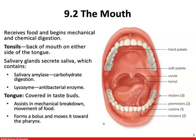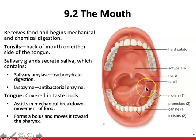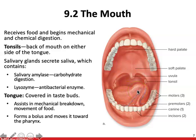Saliva also contains lysozyme, which is an antibacterial enzyme that helps protect us against diseases and foreign invaders coming in through our mouth. The tongue is covered in taste buds and is responsible for assisting in the mechanical breakdown and movement of food. The tongue forms a bolus — a mass of chewed food — and pushes it backward towards the pharynx.